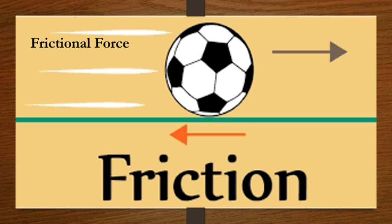Here you can see that a football is rolling on the ground going towards the right, but the frictional force is acting opposite to the ball's direction.